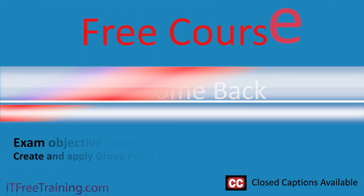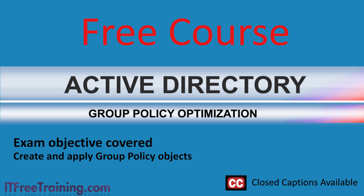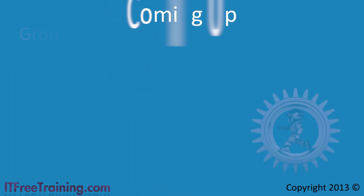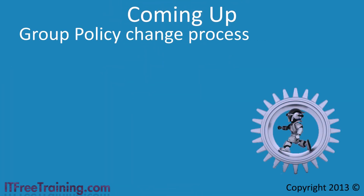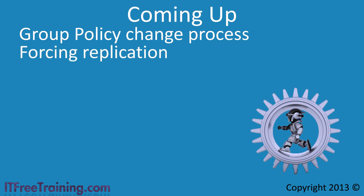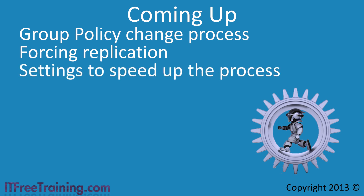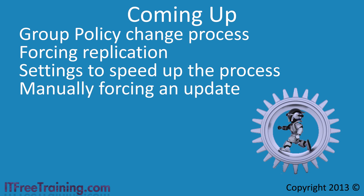In this video I will look at what can delay Group Policy settings from taking effect on your clients and what you can do to speed up the process and get more consistent results. First I will look at the process that occurs when you make changes to Group Policy. Once the changes are made these will need to be replicated. I will then look at how to force a replication if you do not want to wait, and lastly at forcing Group Policy to update using the GP update command, which allows you to apply Group Policy on a client immediately rather than waiting for the next refresh.